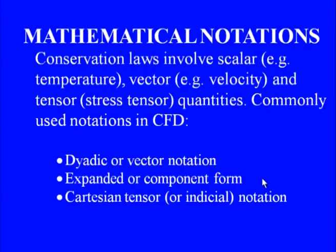We also need an equation of state, specifically for compressible fluid flow. The conservation laws involve scalar quantities such as temperature, pressure, and density; vector quantities like velocity and forces; and tensor quantities like the stress tensor. The commonly used notations in CFD are dyadic or vector notation, expanded or component form, and Cartesian tensor notation.